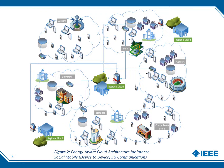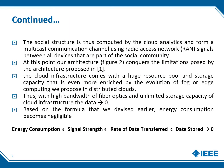During the event, all the devices within the concert hall are connected via radio access network. The social structure is then computed by cloud analytics, forming a multi-cast communication channel using radio access network signals between all devices that are part of the social community. At this point, our architecture, shown in Figure 2, conquers the limitations posed by the previously proposed architecture.